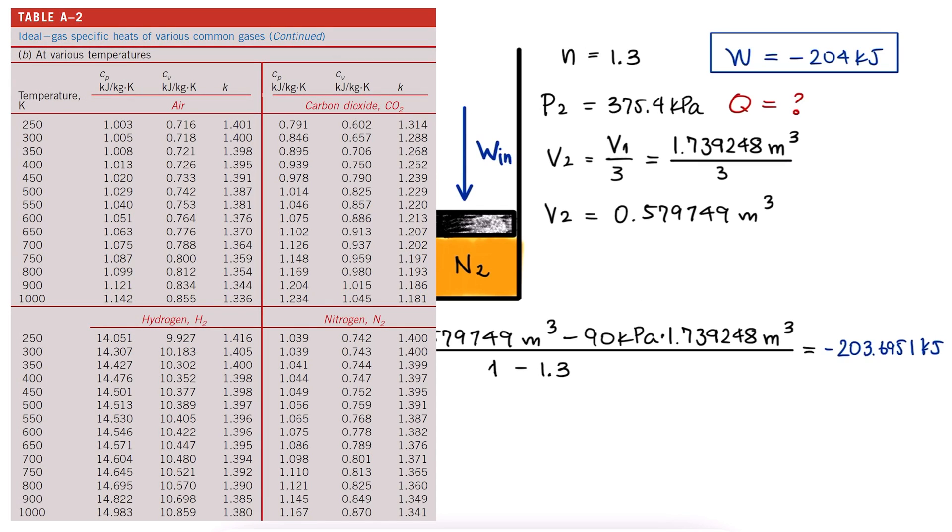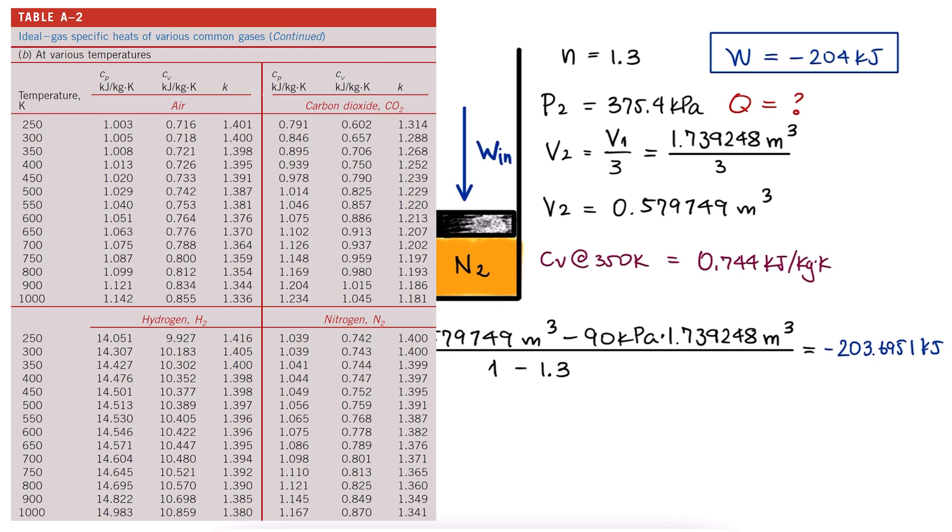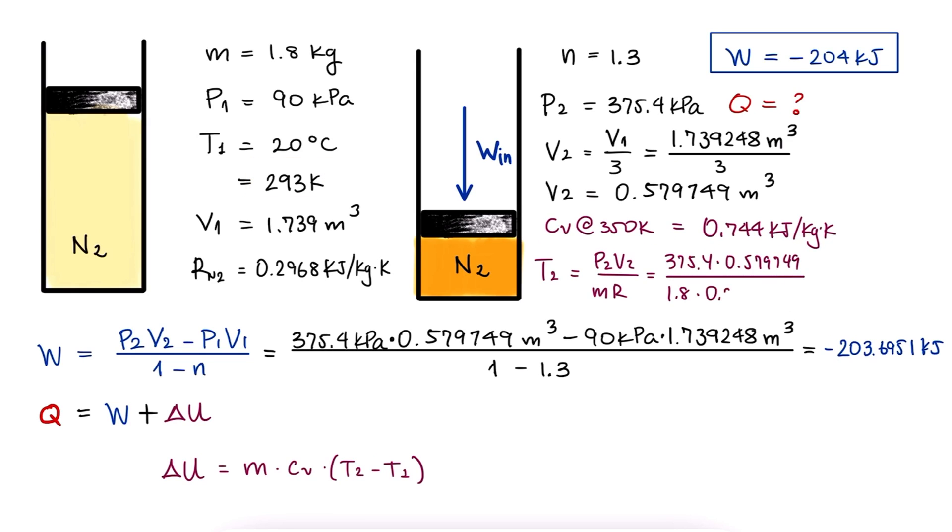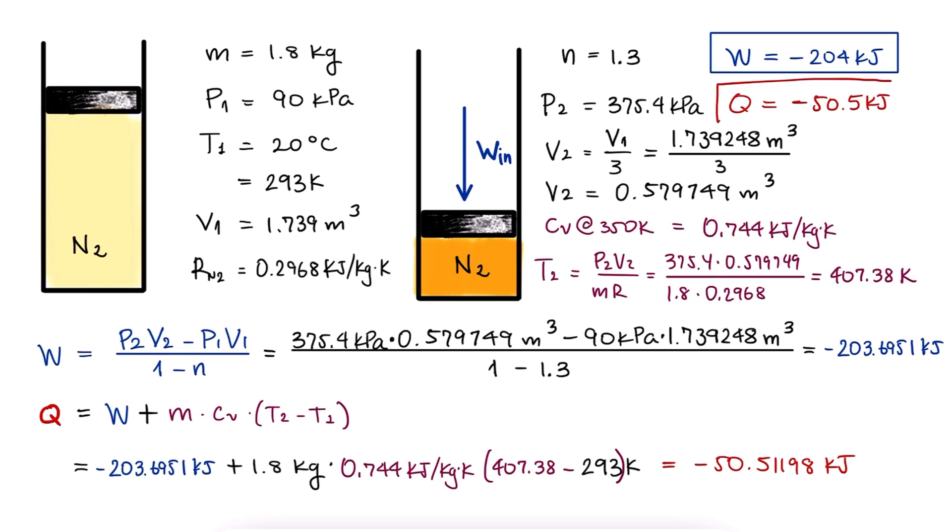We look up the specific heat CV at around 350 Kelvin, and this is a good approximation since we start just below 300 and we're gaining temperature as we compress the piston cylinder, and we calculate T2 with the ideal gas equation. We substitute all values that we had already found to calculate the total heat transfer as minus 50.5 kilojoules.